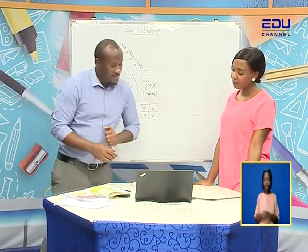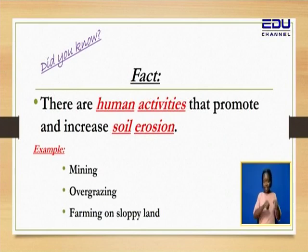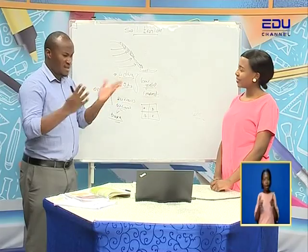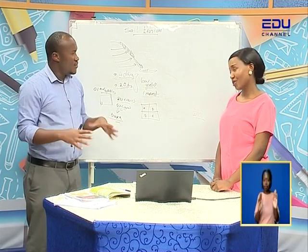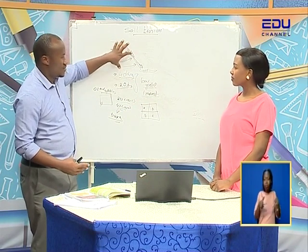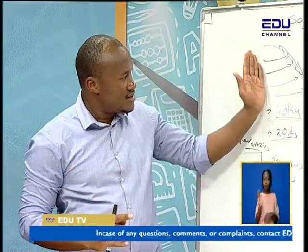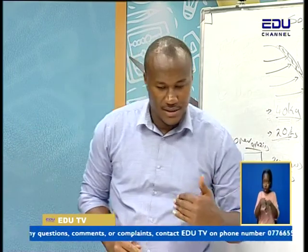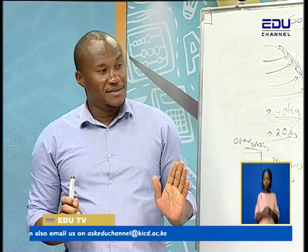Another one: we have farming on sloppy lands — what the host was doing to her grandmother's land, digging on sloppy grounds. You are supposed to cultivate, yes — agriculture is the heart of our living — but on a sloppy land there is a way you're supposed to do it. Not just digging with a jembe, a panga, a hoe, and doing it anyhow. There is a method. So those are some of the human activities that promote and increase soil erosion.